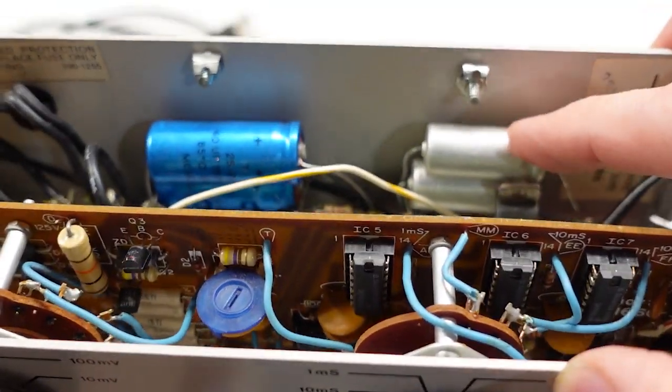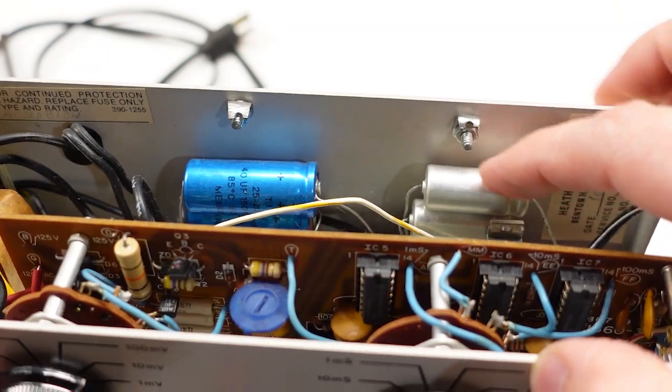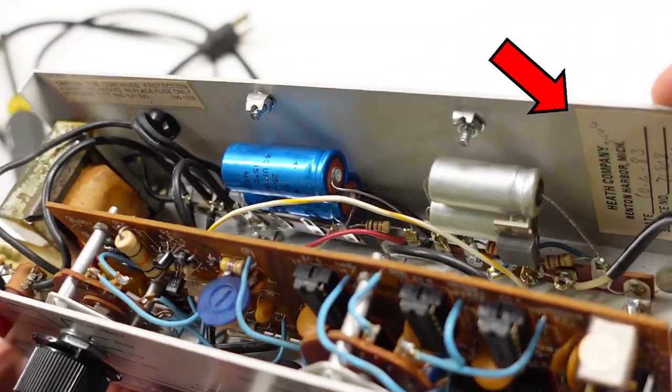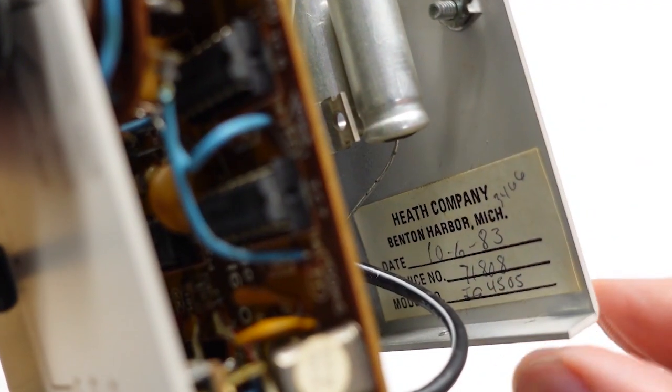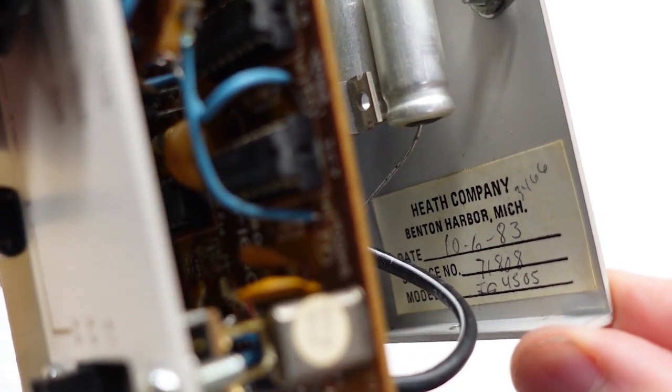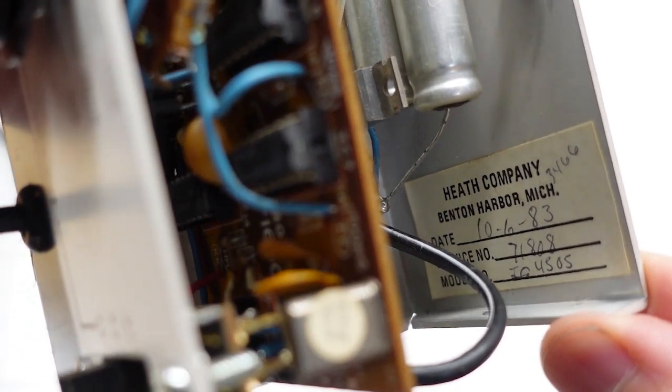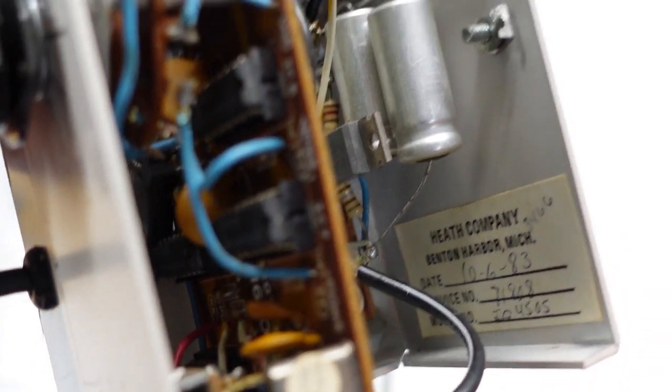A quick internal inspection also looks encouraging. All the parts look like they're still there, nothing looks or smells burnt, and there's no corrosion. These electrolytics in the power supply circuit are likely past their prime, so maybe I'll get away with just changing out these four caps. Hey, check this out. Not sure if this label means the unit was built by Heathkit in October of 83, or was serviced then. Either way, that pretty much confirms that it's at least 38 years old.